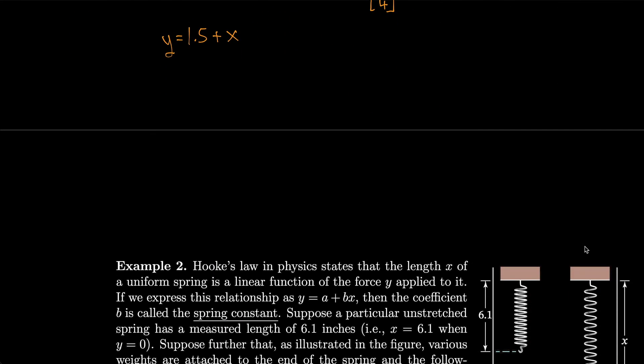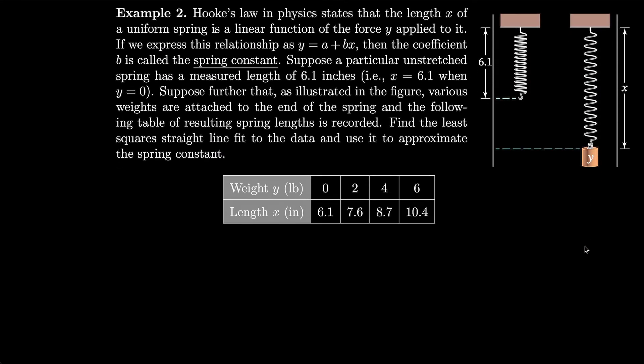How about we do another example? So Hooke's law in physics states that length x of a uniform spring is a linear function of the force y applied to it. If we express this relationship as y = a + bx, then the coefficient b is called the spring constant. Suppose a particular unstretched spring has a measured length of 6.1 inches, that is, x = 6.1 when y = 0. Suppose further that, as illustrated in the figure, various weights are attached to the end of the spring and the following table of resulting spring lengths is recorded. Find the least square straight line fit to the data and use it to approximate the spring constant.